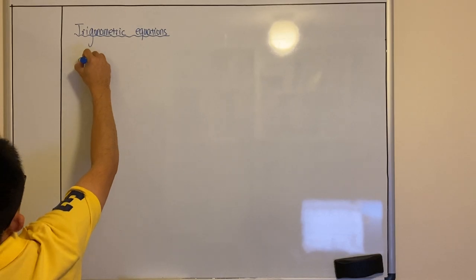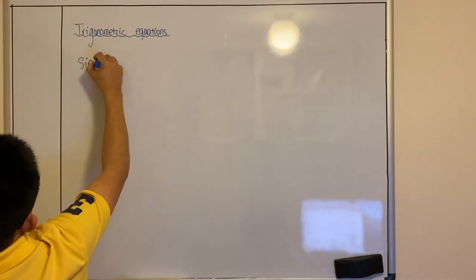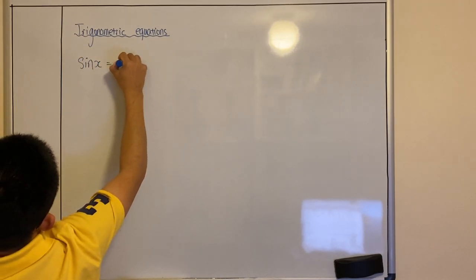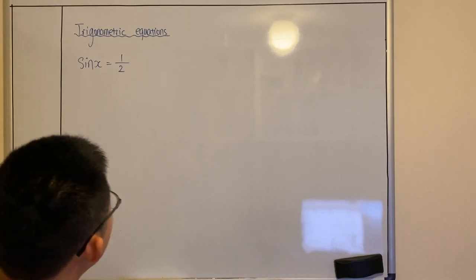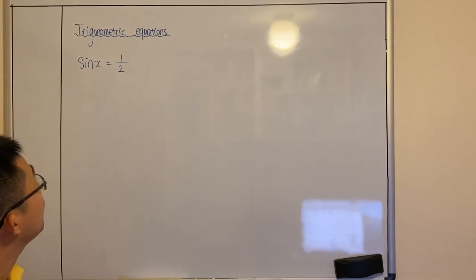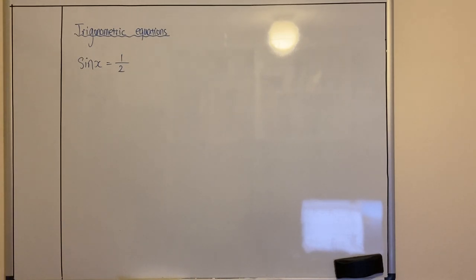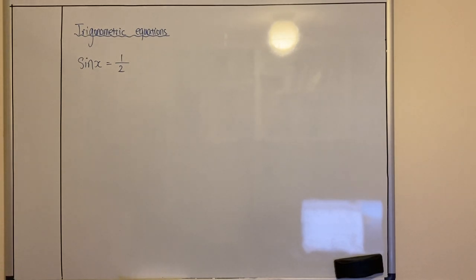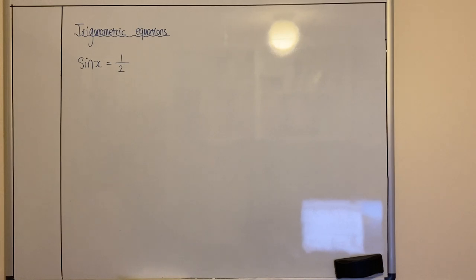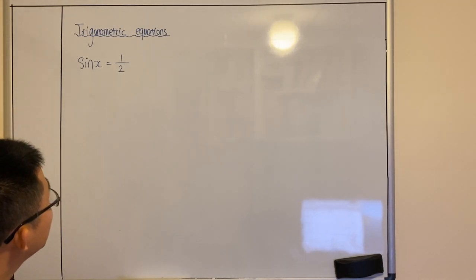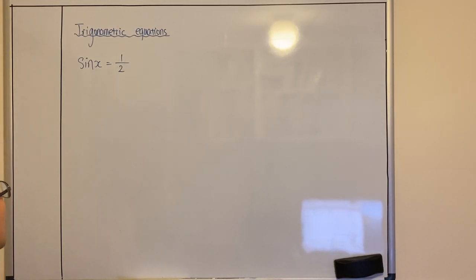We'll have sine x equals to half. Now we call this a trigonometric equation because we have a variable x, and sine x is equal to half, and you want to work out what the answer for x is. At this stage we're only dealing with questions in terms of degrees. Later on you're going to learn the angles in terms of radians.